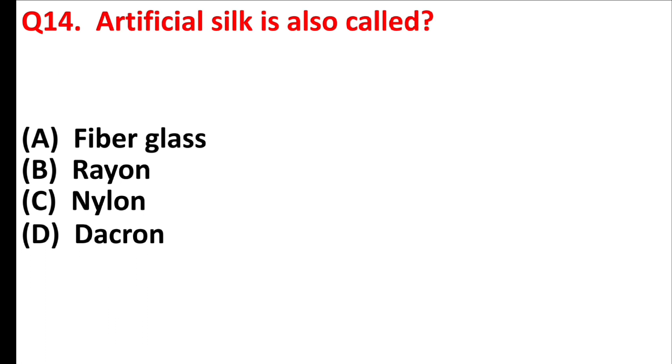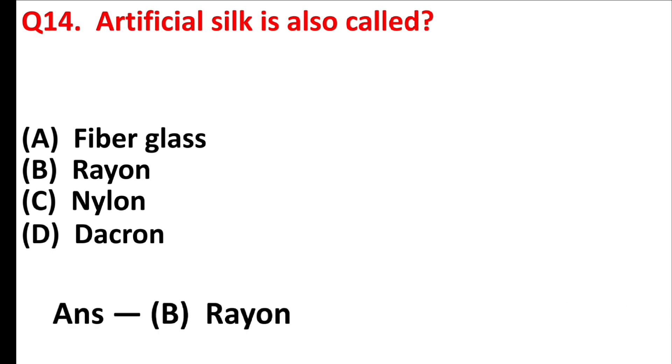Artificial silk is also called — Answer is Option B: Rayon.